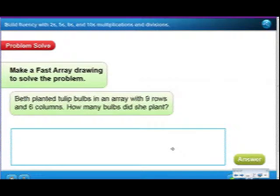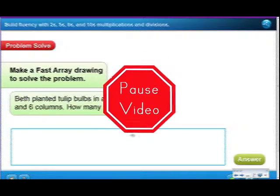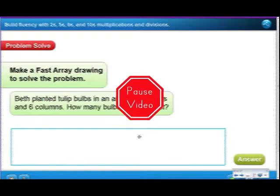Problem number 4. Again, a fast array. We want to be able to see if you can do it. This time, with 9 rows, Beth planted tulip bulbs in an array with 9 rows and 6 columns. You don't have to do all 9 rows and 6 columns. Just make it into a faster array. You can also make it cute because it is a bulb, and that's part of a flower, a tulip. So, this is problem number 4.